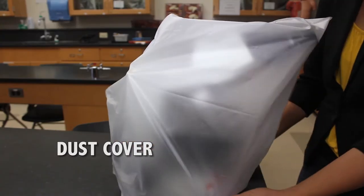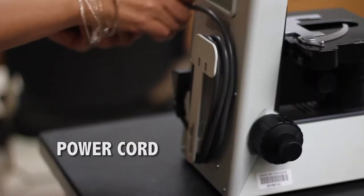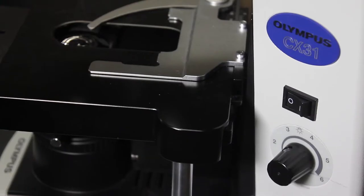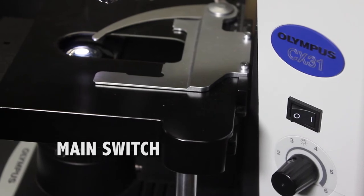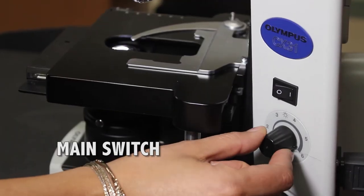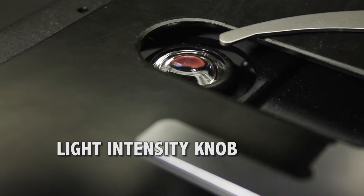Let's look at the different parts of a microscope. Dust cover, power cord, main on switch, light bulb, light intensity knob or dimmer.